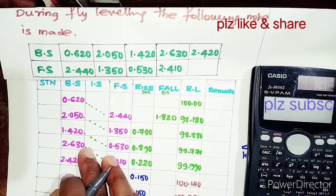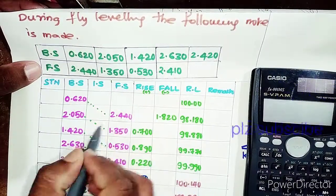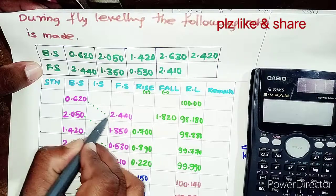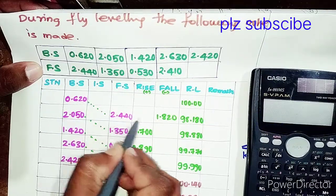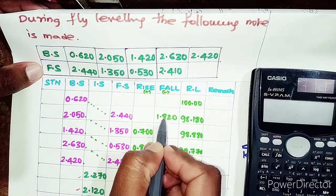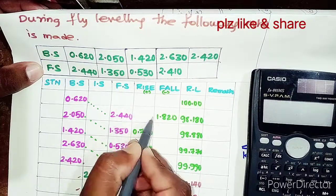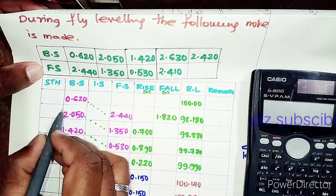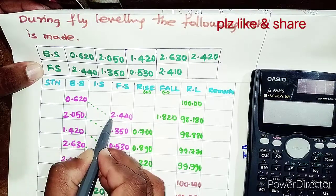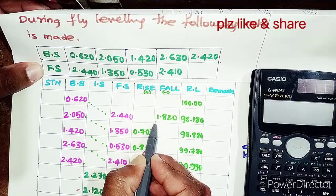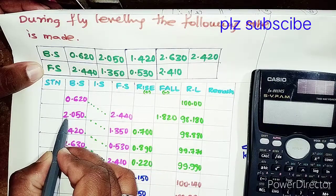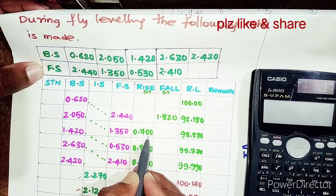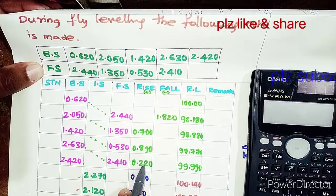For the Rise and Fall method, preceding value minus succeeding value is calculated. If the result is negative, write it in the Fall column; if positive, write it in the Rise column. For example, 0.620 minus 2.440 gives −1.820, so 1.820 goes in Fall. Similarly, all other values are calculated.